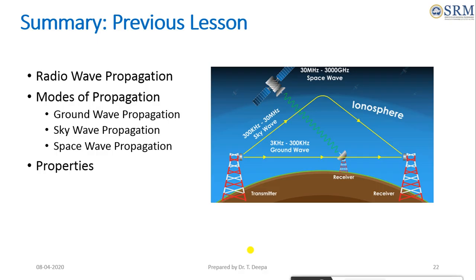In ground wave propagation, the ground wave can propagate a considerable distance over the earth's surface, particularly in the low frequency and medium frequency of the radio spectrum. In sky wave propagation, the radio wave is transmitted towards the sky and refracted by the ionosphere towards the desired location on earth. In space wave propagation, the radio wave travels directly from the transmitting antenna to the receiving antenna.